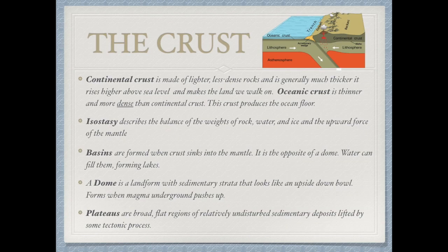On this page we have six bolded terms, and it would be wise to put these on index cards and start studying. First, we have the crust — the continental and oceanic crust. The continental crust is much thicker, lighter, and less dense, so it usually forces the thinner, denser oceanic crust underneath it during subduction. The continental crust is what we walk on, while the oceanic crust is thinner and lies below the ocean — we refer to that as the ocean floor.